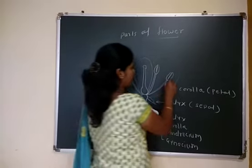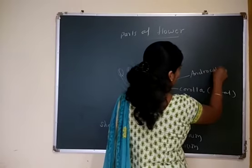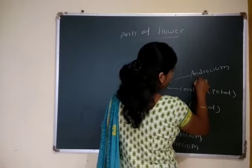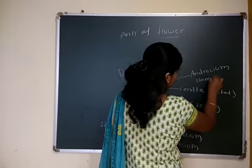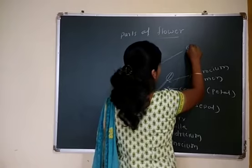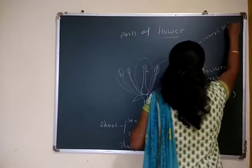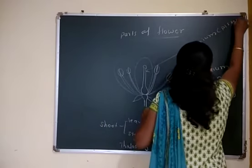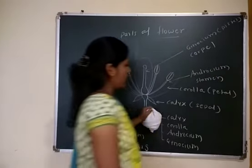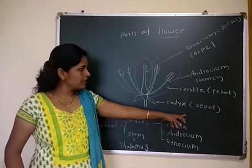Inner to corolla there is androecium. The individual member of androecium is known as stamen. Then the innermost whorl is gynoecium. An individual member is known as carpel. So calyx is the outermost whorl, green in color, with individual member being sepal.